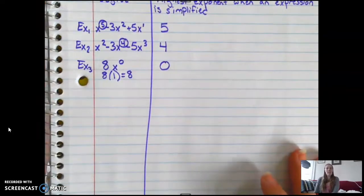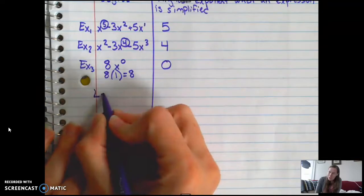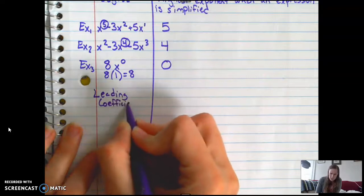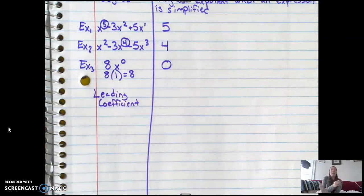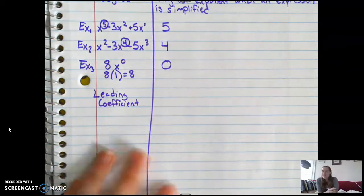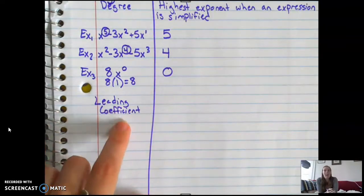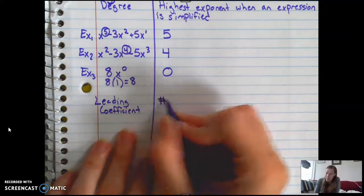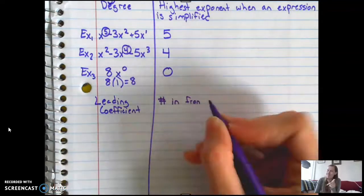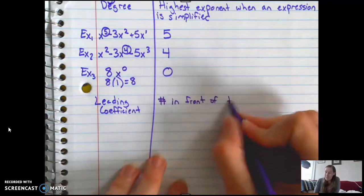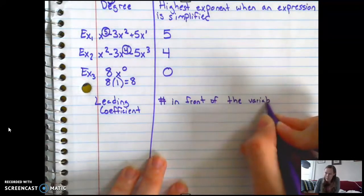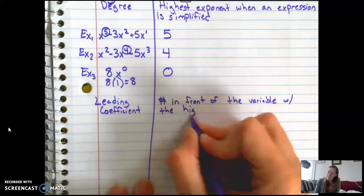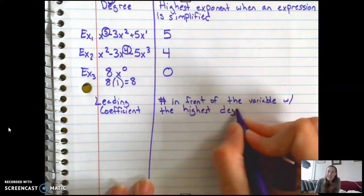The next thing we're going to talk about is our leading coefficient. So a leading coefficient has to do with the degree. Leading means in front of, and coefficient means number. So what this is, it's the number in front of the variable, so our x or whatever, with the highest degree.